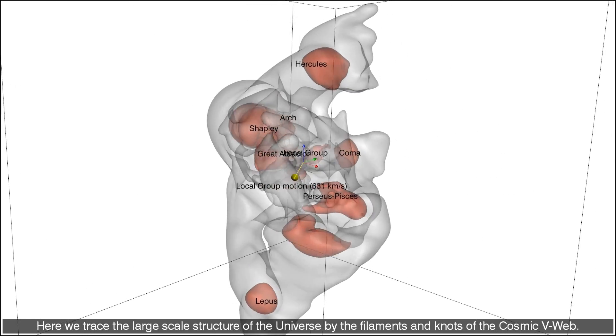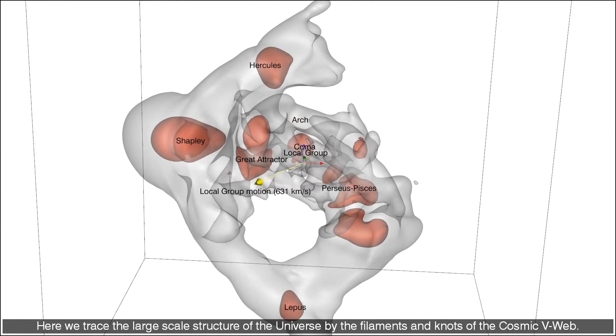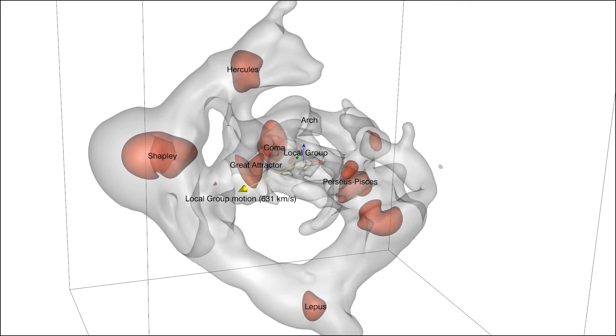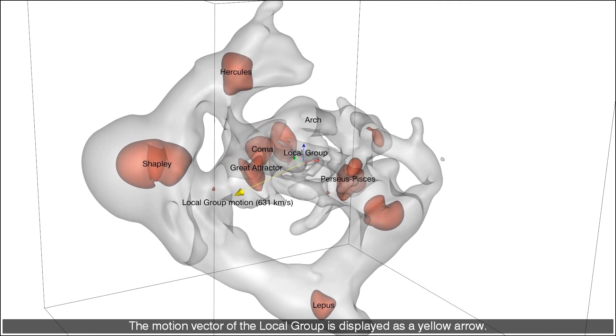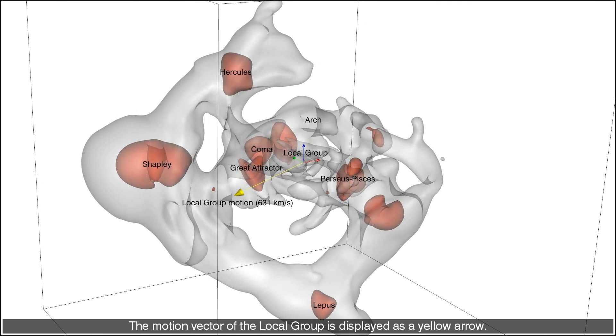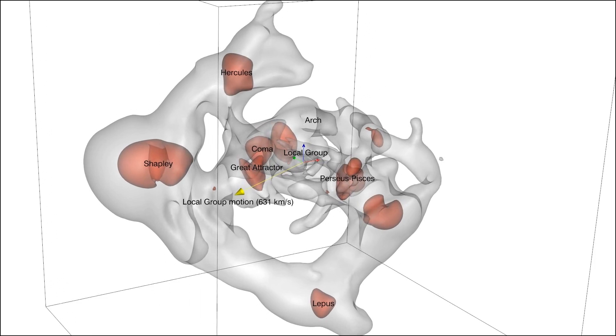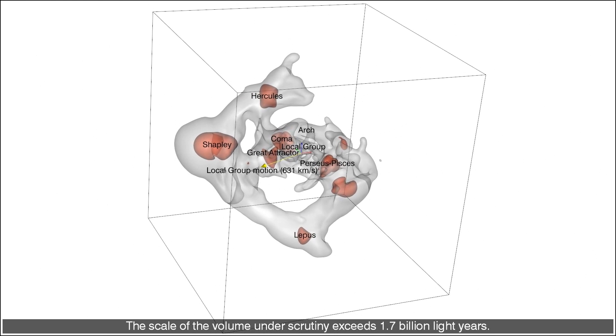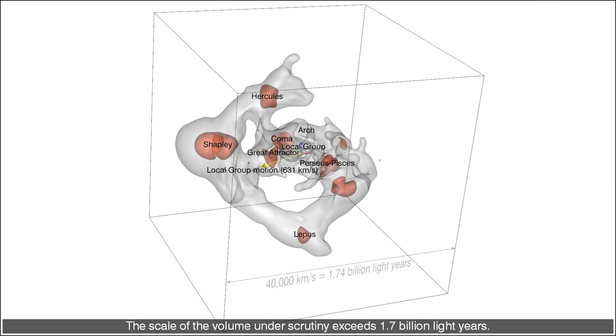Here we trace the large scale structure of the universe by the filaments and knots of the cosmic web. The motion vector of the local group is displayed as a yellow arrow. The scale of the volume under scrutiny exceeds 1.7 billion light years.